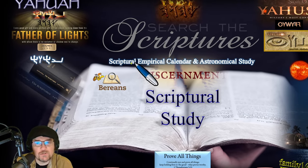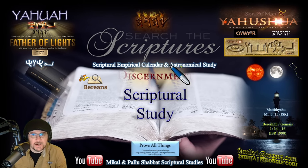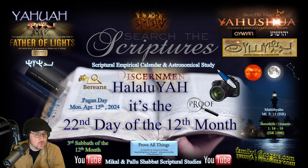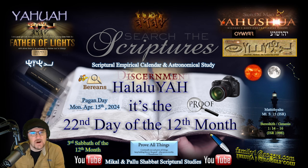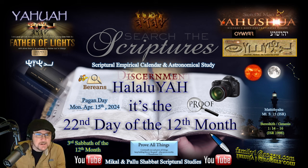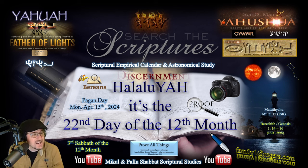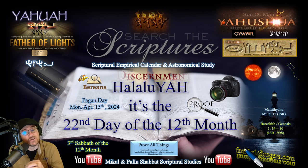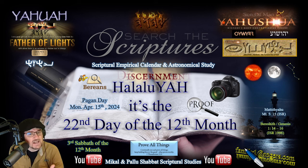Welcome to another scriptural empirical calendar and astronomical study in which we together as one will be exploring the sign of the 22nd day of the 12th month. Yes, there is a sign for each and every day. Most people just only look at new moon days, but with the celestial clock and calendar of Yahuwah with the sun, moon and stars, you can compare year after year, day by day. It's very easy to do, especially in this day and age.